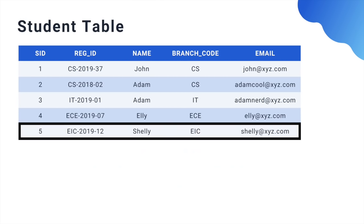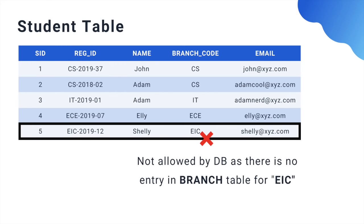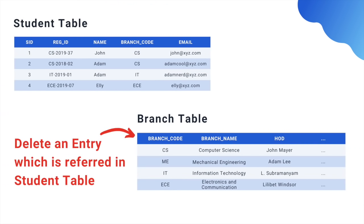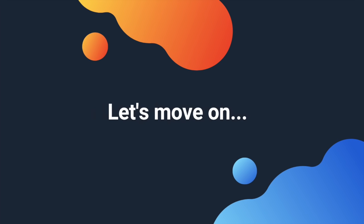This way, while making a new student entry, a wrong branch name cannot be provided — else the database will return an error. Similarly, if someone deletes a branch entry or updates a branch code in the branch table, they will have to change the same in the students table too. Generally this is not allowed by the database, and the database returns an error when someone tries to modify a column value which is used as a foreign key in another table. Hence, this way we can force integrity of data in a relationship using foreign keys.